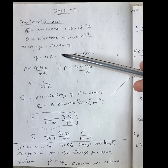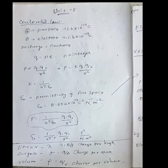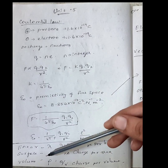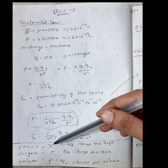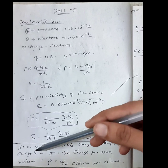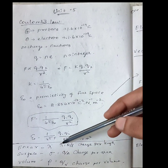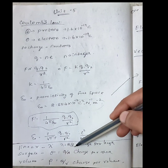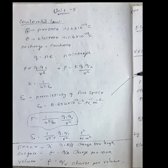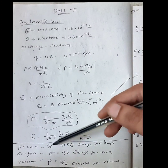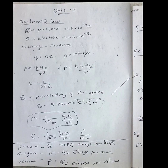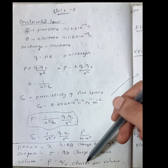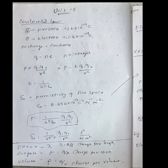Charges can be distributed in three ways: linear, surface, or volume. For a linear charge distribution, the charge density is lambda (λ = q / L), which is charge per unit length. For surface charge distribution, sigma (σ = q / A) is charge per unit area. For volume charge distribution, rho (ρ = q / V) is charge per unit volume.